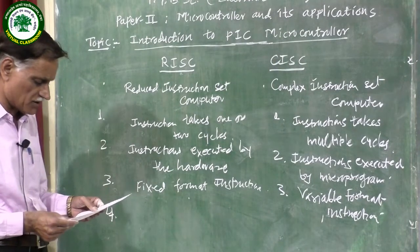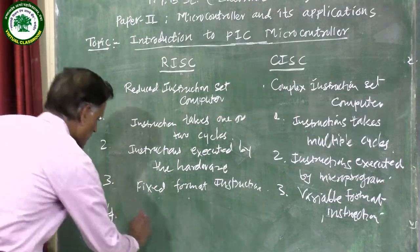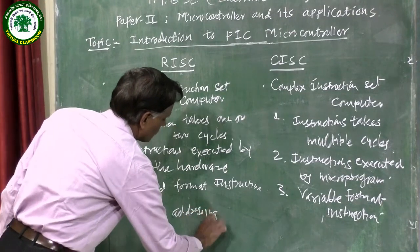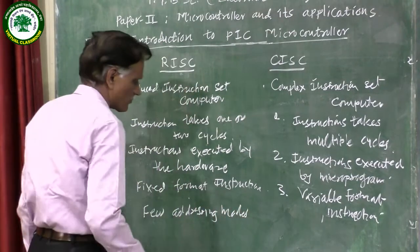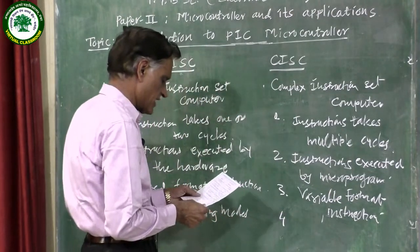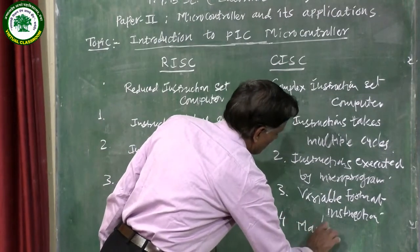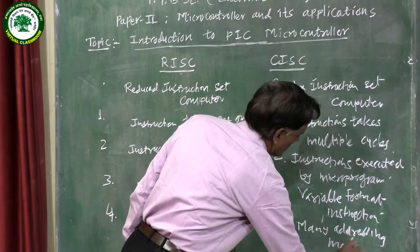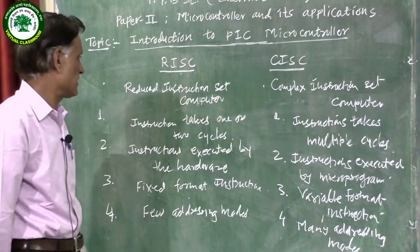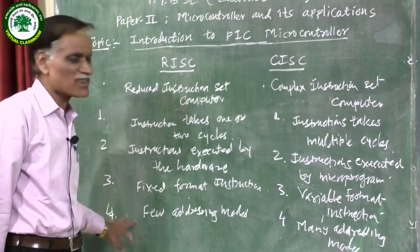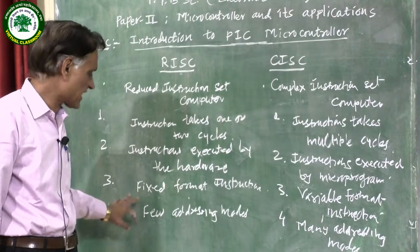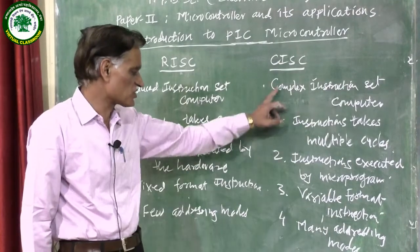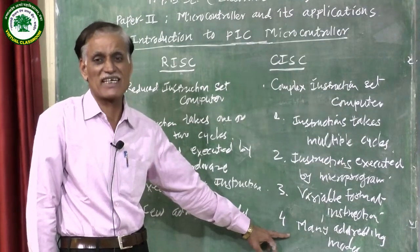The next point for comparison is that RISC uses few addressing modes, while CISC uses many addressing modes. In RISC architecture, a limited number of instructions with a fixed format are used, and therefore these instructions use only a few addressing modes. In CISC architecture, the instructions use many addressing modes.